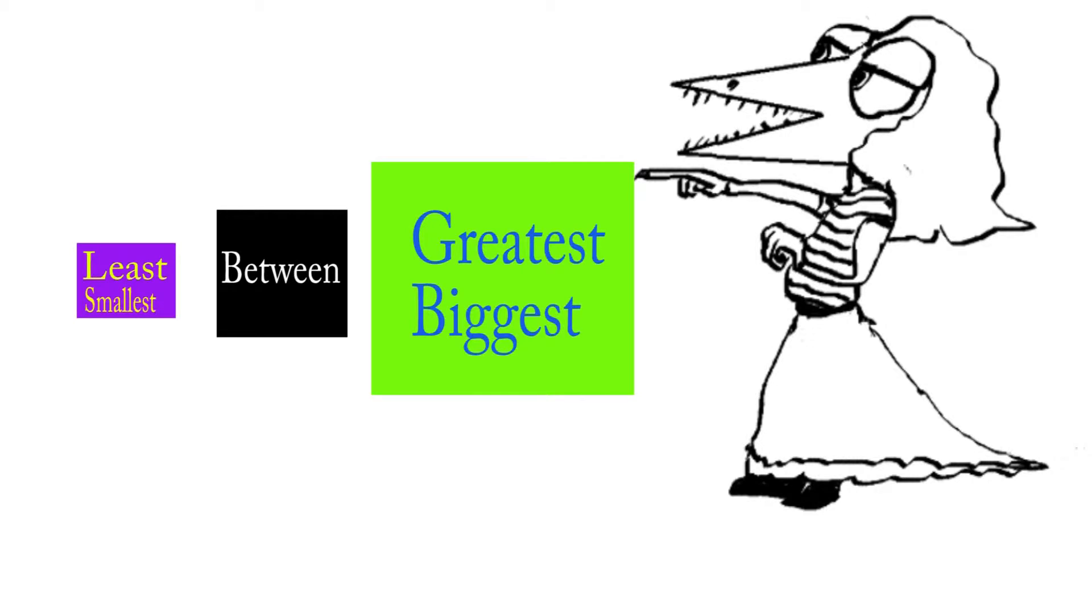Maria, let's start with you. Will you please compare for me these three quadrilaterals? The green one is the greatest because it's the biggest or the largest. And the least is the purple. It's the smallest. That means the black quadrilateral is between the two. It's in the middle.